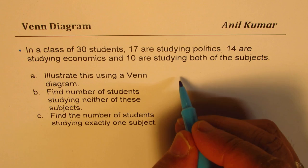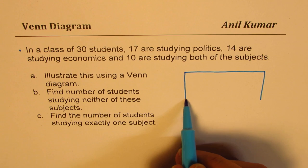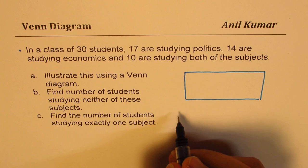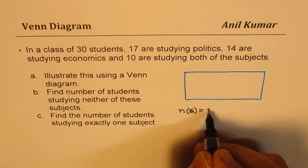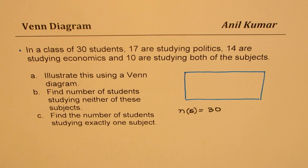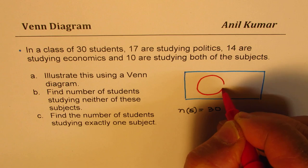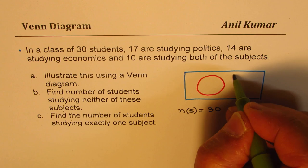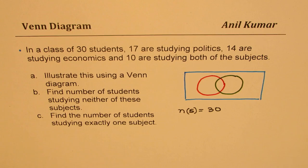So let's first create the Venn diagram. There are 30 students in all. So in our set, we have, let's call the superset with 30 students. 17 are studying politics and 14 are studying economics, 10 are studying both. So basically, we need to consider two sets here. One set for students who are studying politics, the other one, the students which are doing economics. So these are the two sets for us. Let me call this set P for politics and E for economics.